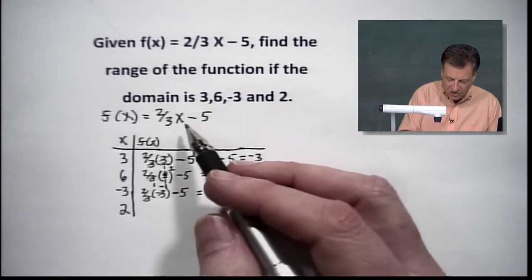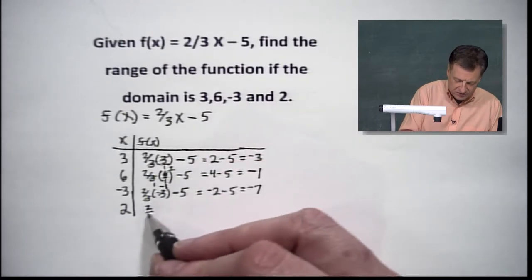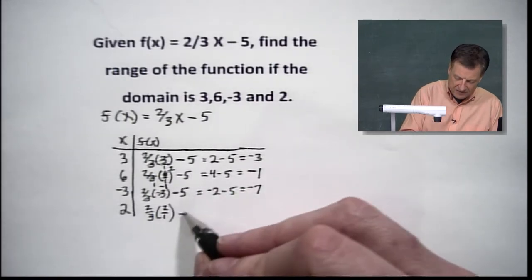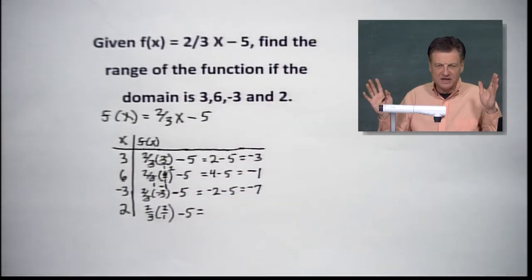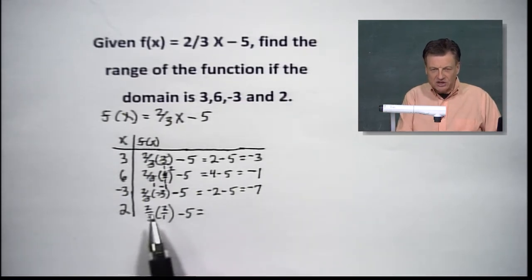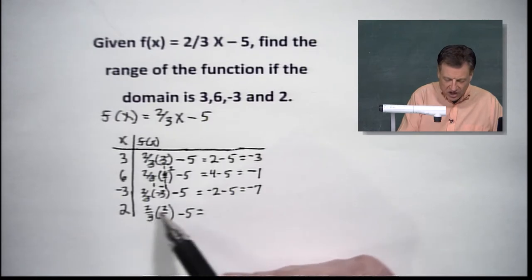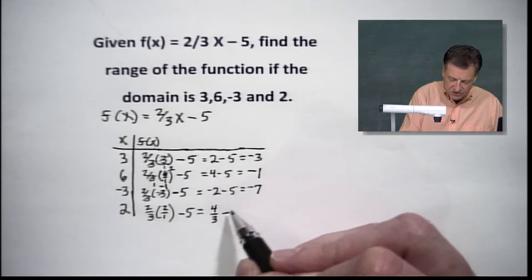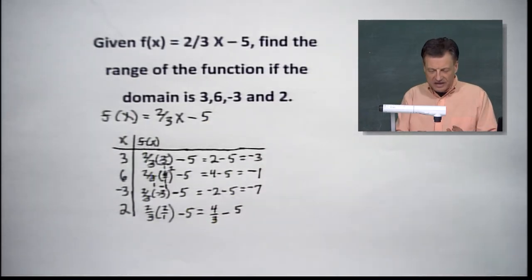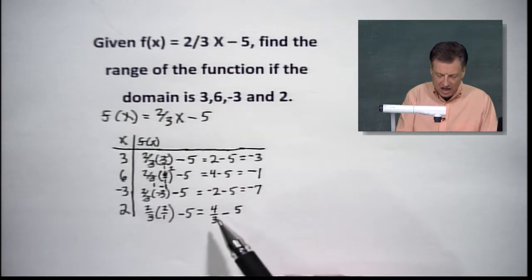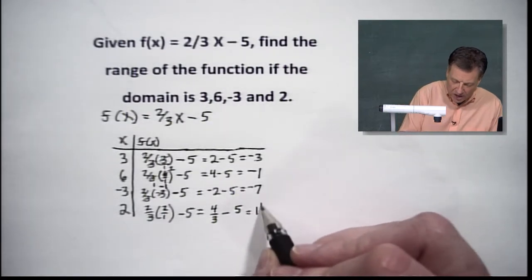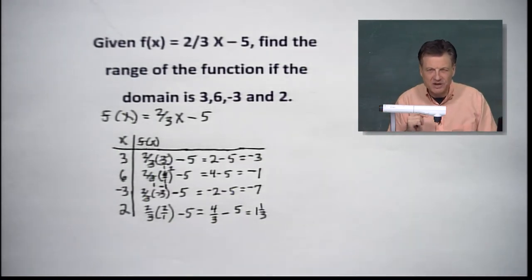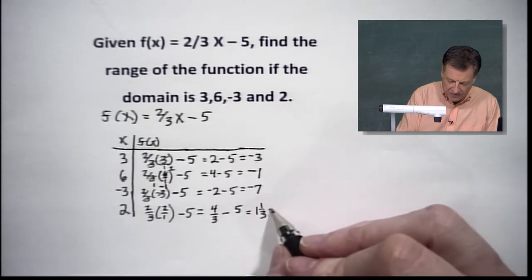Last but not least, we're going to stick in that crazy looking 2. We've got two-thirds times 2 over 1, and we're going to subtract the 5. Notice something, it is positive. There is no cancellation. We cannot cancel horizontally. We are stuck with 2 times 2 giving us 4, and that's going to give us over 3. And we're going to subtract 5 from that.